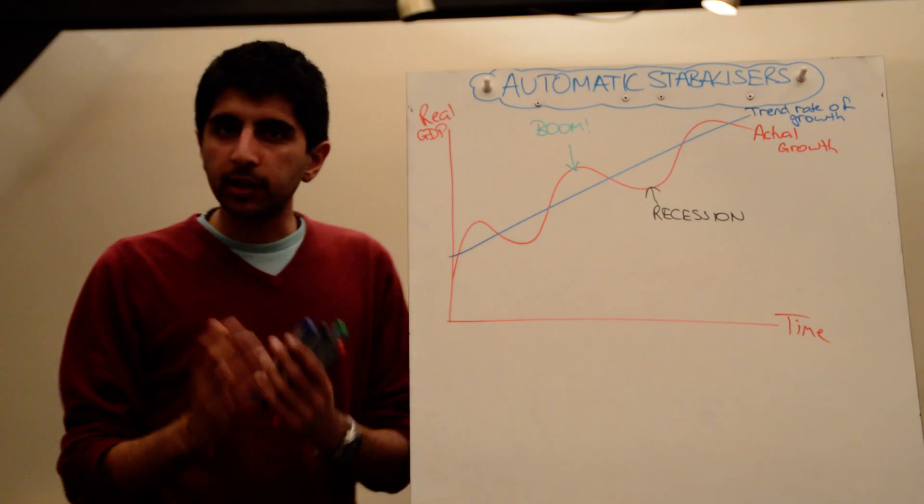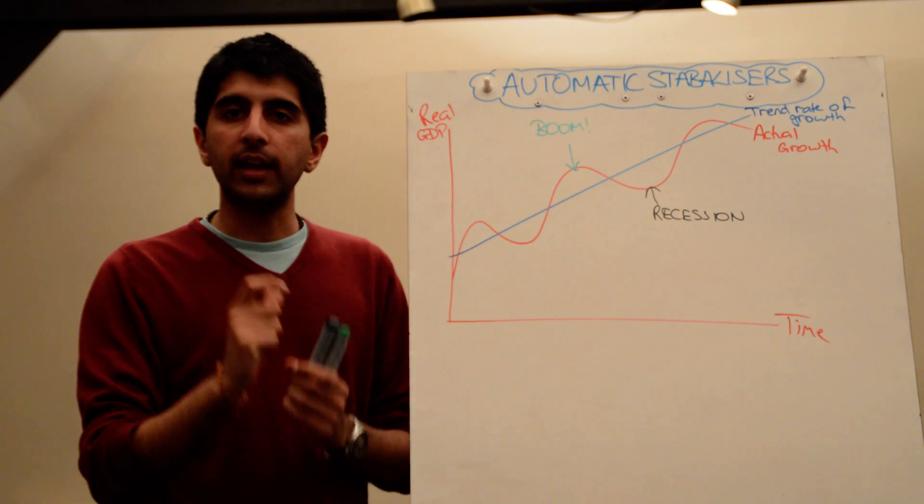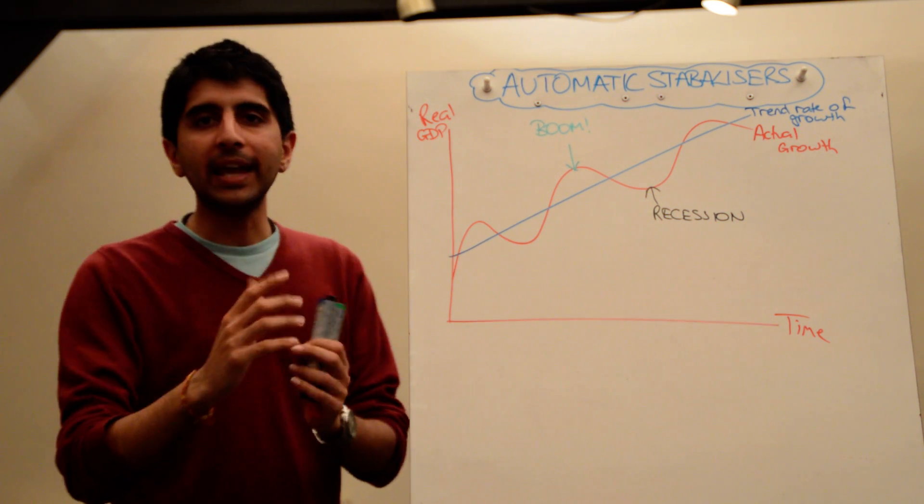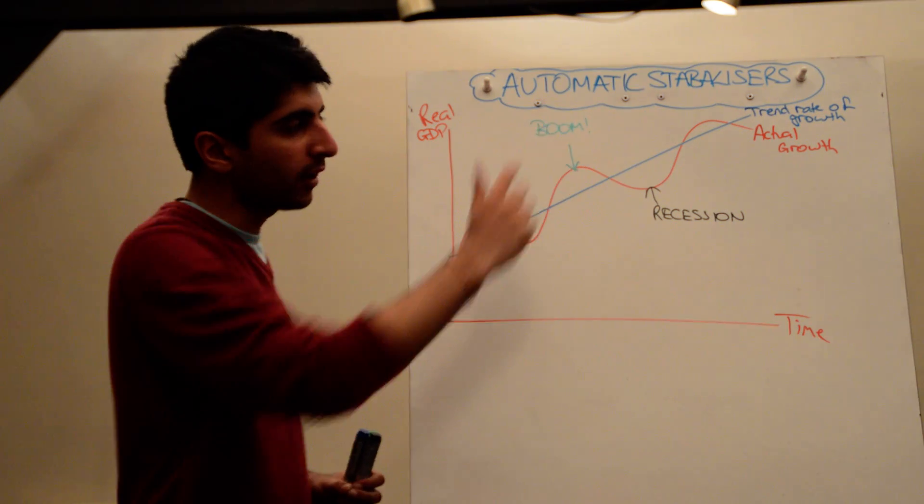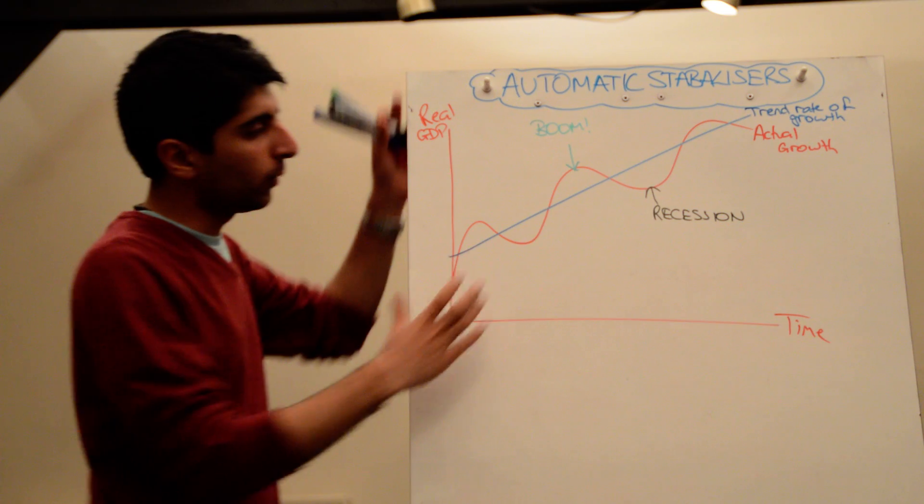Automatic stabilizers are something the government can fall back on to negate the fluctuations in economic growth, to negate the size of the fluctuations in the business cycle. How does it work? Well, what I've drawn here is the economic cycle for you.